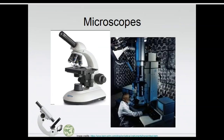How we know what the ultrastructure of cells looks like is by using microscopes — amazing pieces of technology that allow us to see what is inside these cells. Two kinds of microscopes we need to know: light microscopes, which we have at school costing a couple hundred dollars each and able to magnify up to about 400 times, and electron microscopes.